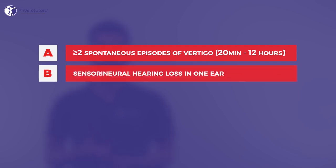B, audiometrically documented low to medium frequency sensorineural hearing loss in one ear defining the affected ear on at least one occasion before, during, or after one of the episodes of vertigo.